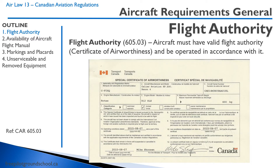Here we can see a special certificate of airworthiness. It's a different type of flight authority in that it doesn't meet any specified airworthiness requirements, or it hasn't been tested anyway. So in this case, it's a home-built or amateur-built aircraft. The certificate of airworthiness has the registration and manufacturer serial number on it, and you have to carry this on board. It is valid whenever the aircraft is operated and maintained in accordance with it.